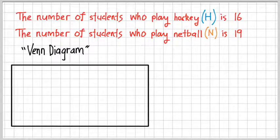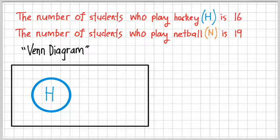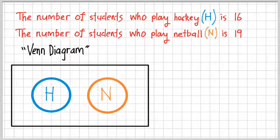And there's our rectangular box. Now this represents all possible outcomes. So everything that could happen is within this little rectangle here. Here we go. That is the event of students who play hockey. We know that the number that belongs in there is going to be 16. So 16 students playing hockey. Similarly, we have students who play netball. That is the other event. So remember we've got two events going on here.